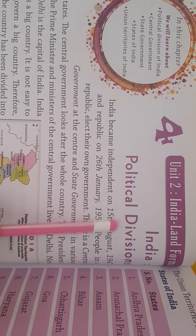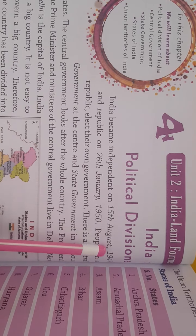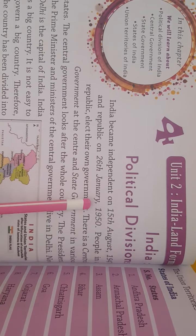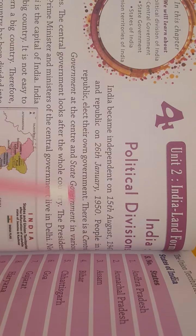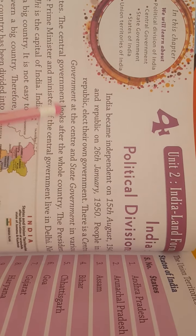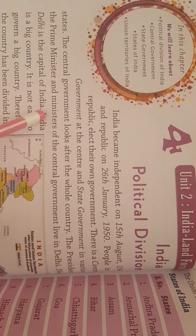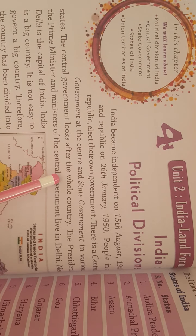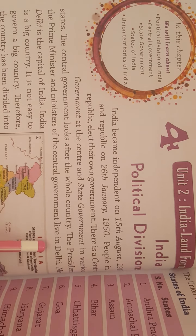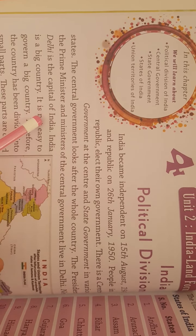India Political Divisions. India became independent on 15th August 1947 and became a republic on 26th January 1950. People in a republic elect their own government. There is a central government at the centre and state governments in various states. The central government looks after the whole country. The president, prime minister, and ministers of the central government live in Delhi. New Delhi is the capital of India.